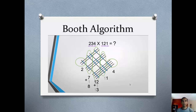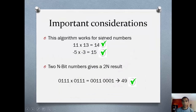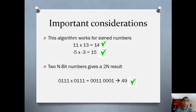Hey everyone, today I'm going to show you how you can make the Booth's algorithm to multiply. There are a few things we need to keep in mind when doing this. The first one is that this algorithm works for signed numbers. And the second one is that if you multiply two 4-bit numbers, you will get an output of 8 bits.